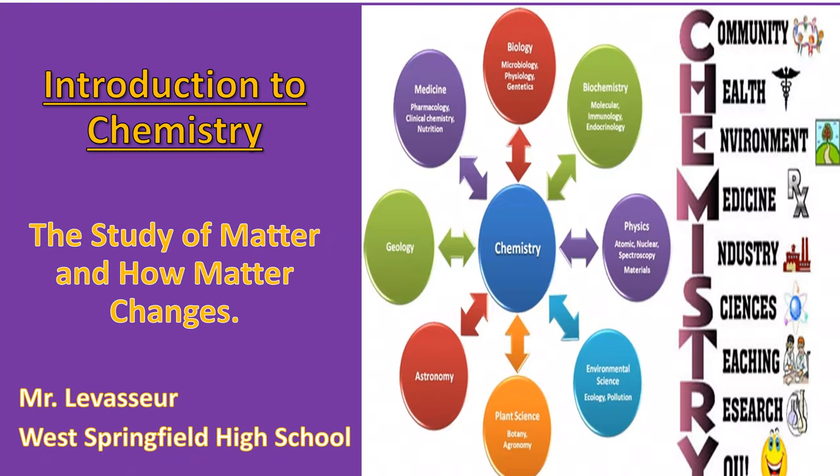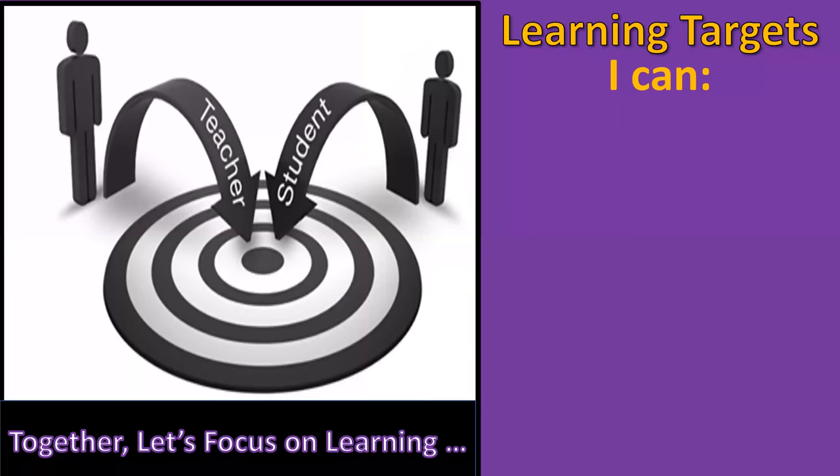Chemistry is important to study any of the sciences. You need chemistry really to understand biology or medicine, geology, astronomy, plant science, environmental science, physics, and biochemistry. They call chemistry the central science because all the other sciences rely on it.